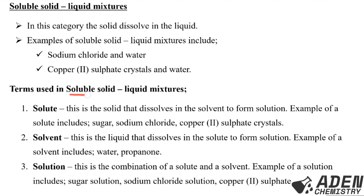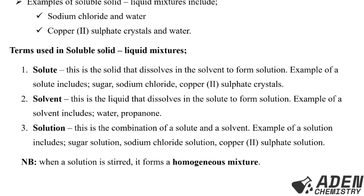Let us look at terms used in soluble solid-liquid mixtures. Number one: solute — this is the solid that dissolves in the solvent to form a solution. Examples include sugar, sodium chloride, and copper sulfate crystals. A solvent is the liquid in which the solute dissolves to form a solution; an example is water. A solution is the combination of a solute and a solvent. When a solution is stirred it forms a homogeneous mixture.